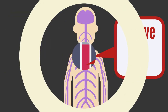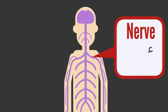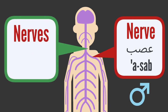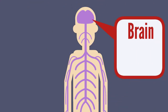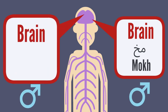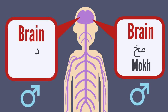Let's move on to a different system. Nerve: asab, asab. And nerves: asab, asab. Next is brain: mukh, mukh. But brain can also be called dmaag, dmaag.